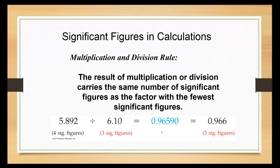There are a set of rules. There's two sets: one for multiplying and dividing, and one for adding and subtracting. When you're looking at multiplication and division, you multiply and divide the numbers as you normally would. For instance, 5.892 divided by 6.10 comes out to be 0.96590.